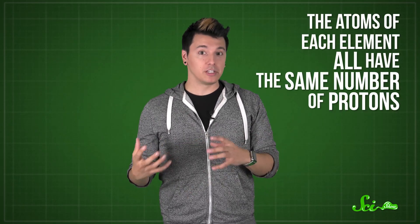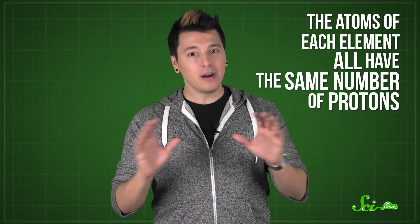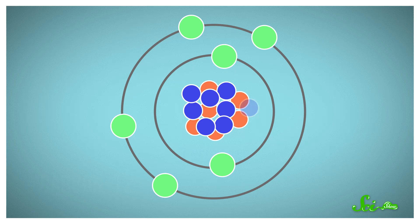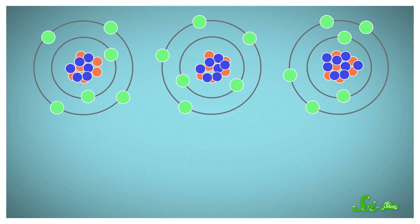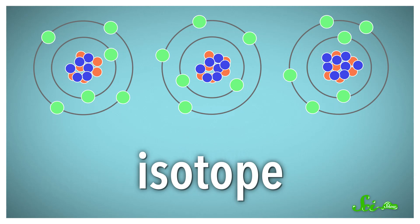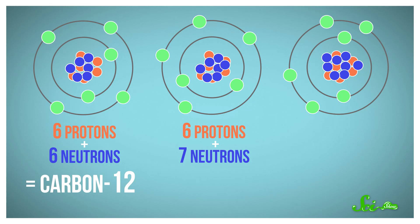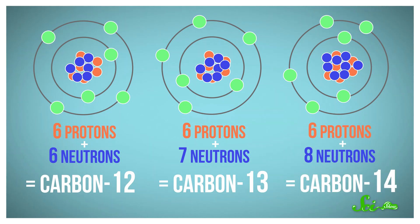Each atom comes with a certain number of protons and neutrons in its nucleus. Different elements are defined by the number of protons in the nucleus, so the atoms of each element all have the same number of protons. But there's usually some wiggle room in the number of neutrons. For example, carbon has 6 protons, but natural carbon can have 6, 7, or 8 neutrons. Those carbon variants are called isotopes, and they're named based on how many protons and neutrons they have. So carbon atoms with 6 protons and 6 neutrons are carbon-12, and 6 protons and 7 neutrons make carbon-13, and so on.